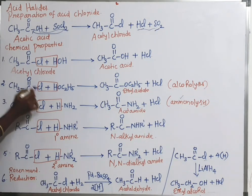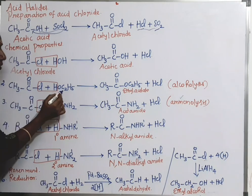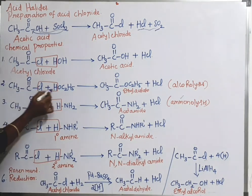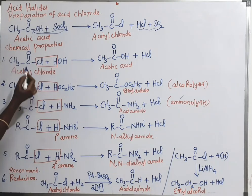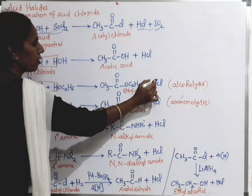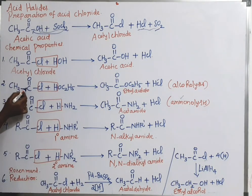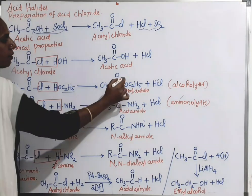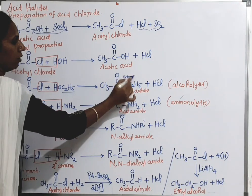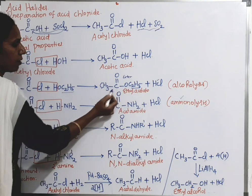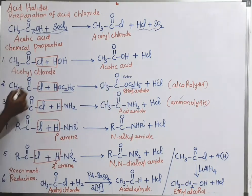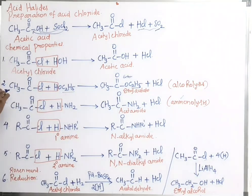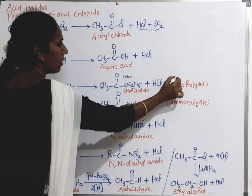The same acetyl chloride undergoes reaction with ethanol (C2H5OH). Here also HCl is removed — the hydrogen in alcohol and the chlorine in acid chloride combine to form HCl. The remaining portion is CH3C(=O)OC2H5, which is ethyl acetate, an ester. So acid chloride reacts with alcohol to form an ester. This reaction is called alcoholysis.